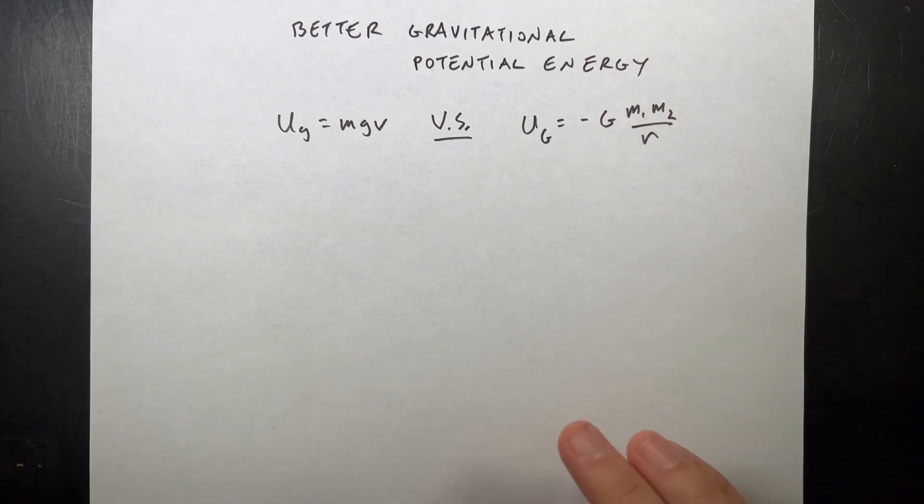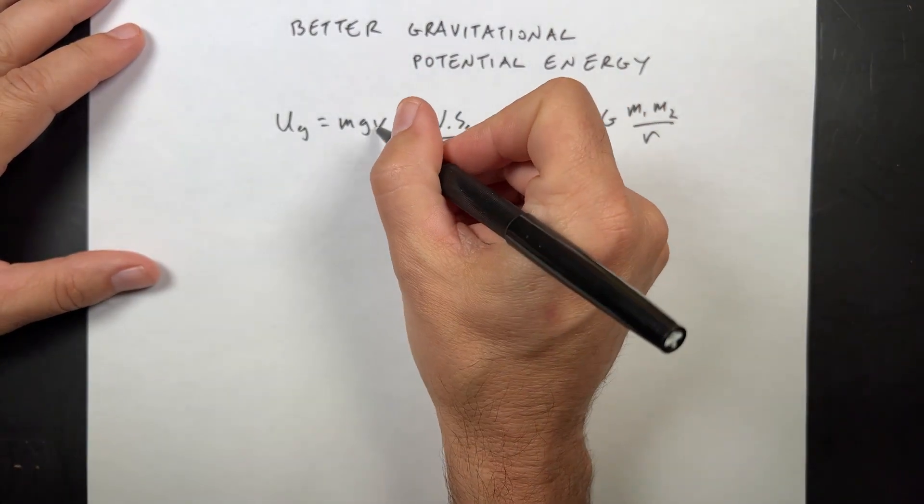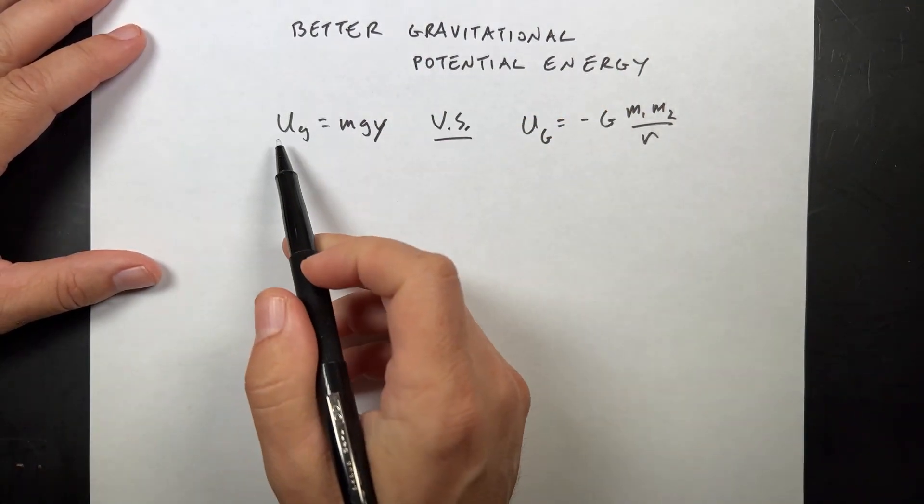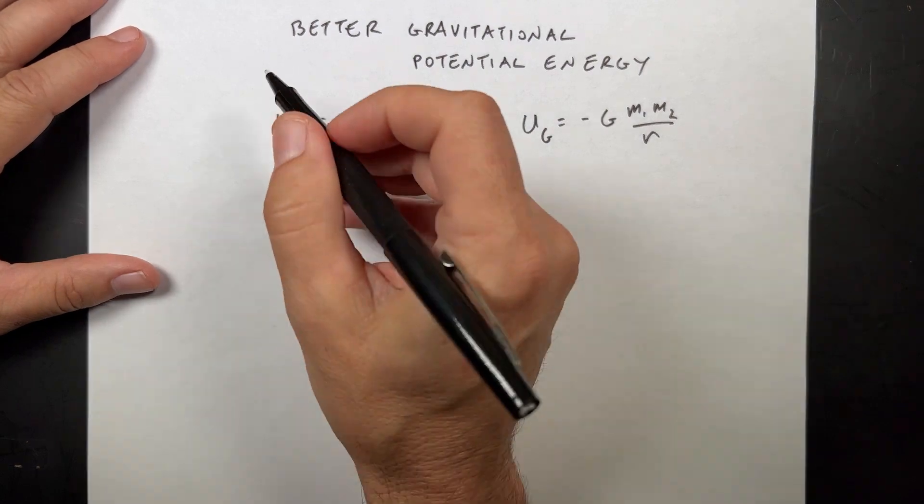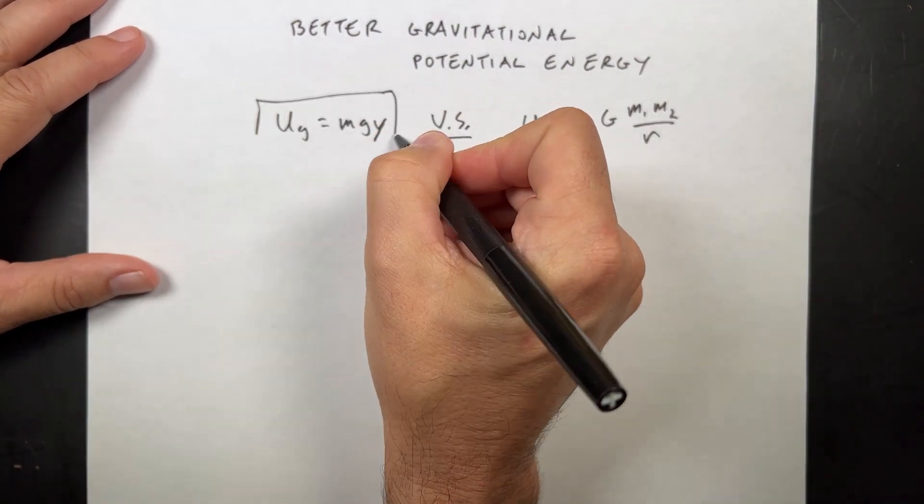If you're in the Algebra-Based Physics course working on energy, the first thing you see when you start talking about potential energy is this gravitational potential energy is mgy.